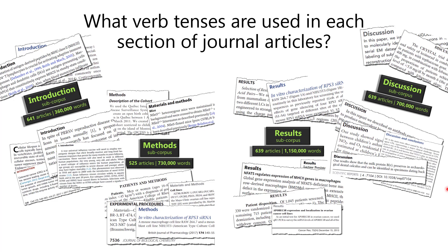So I made a corpus, which means a big collection of different articles, based on biomedical journals, such as Cell, the Journal of Biological Chemistry, Cancer Research, Scientific Reports, and more — about 45 journals in total. And I'd like to share with you the data that I got.